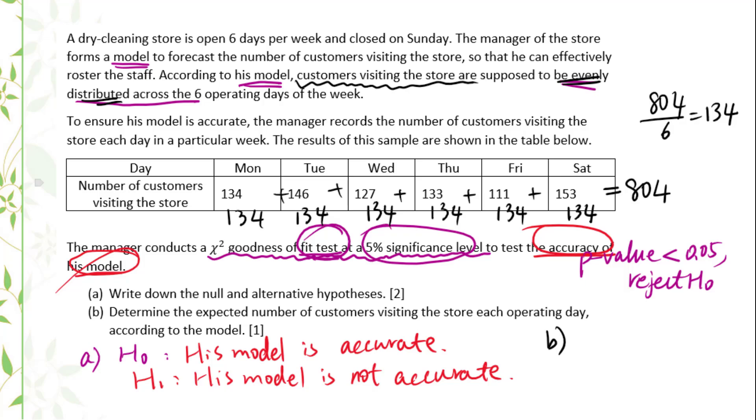Therefore, for part b, determine the expected number of customers visiting the store each operating day: 134.